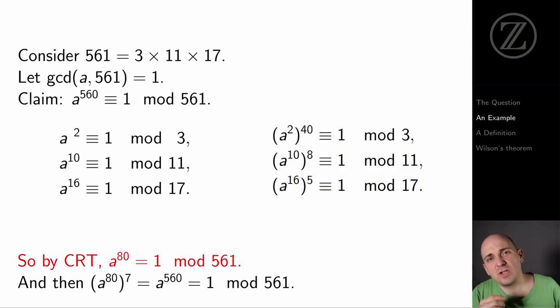Now I glue them all together using the Chinese Remainder Theorem. So because I know that a to the 80th is 1 modulo 3, 11, and 17, I can conclude that a to the 80th power is 1 modulo 561.